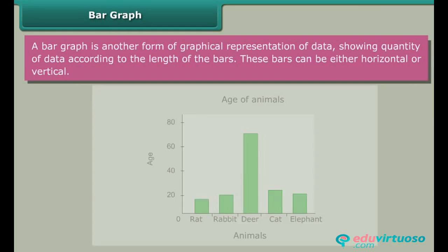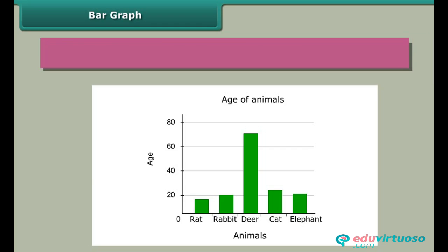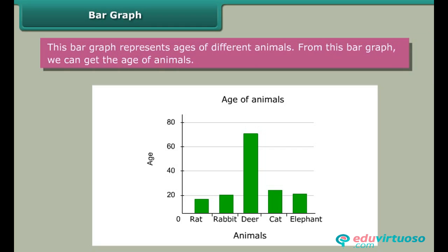Bar graph: A bar graph is another form of graphical representation of data showing quantity of data according to the length of the bars. These bars can be either horizontal or vertical. This bar graph represents ages of different animals, and from it we can get the age of each animal.